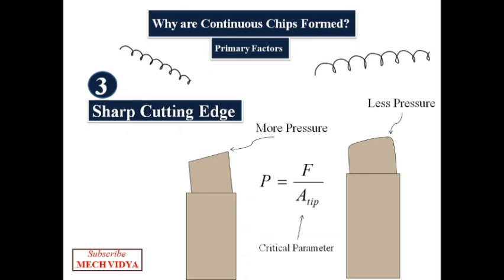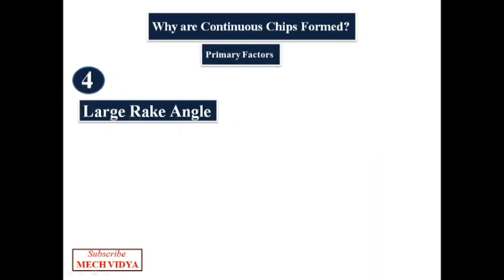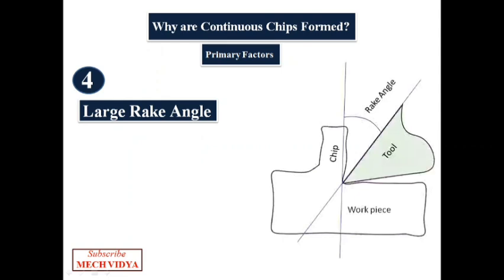After this comes the rake angle. Rake angle is the angle between the tool surface and an imaginary line, usually perpendicular to the chip-tool interface. In simple words, rake angle tells us how tilted the cutting tool is. Large rake angle allows the material to shear more easily along the shear plane, thereby minimizing the friction. Since less material contacts the tool, it reduces the resistance. Also, a large rake angle guides the chip to flow smoothly along the tool face.